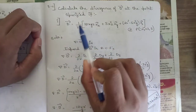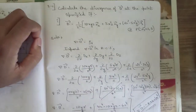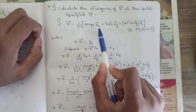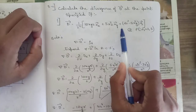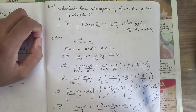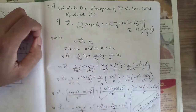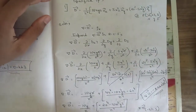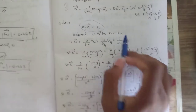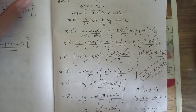This is question 3c — we need to calculate the divergence of D at the specified point. The given expression is 1/z² times (10xyz ax + 5x²z ay + (2z³ - 5x²y) az) at point (-2, 3, 5). Since the point is in x, y, z coordinates, this is a rectangular coordinate system. To find the divergence of D, we use del·D = ρv, and expand del·D in rectangular coordinates.